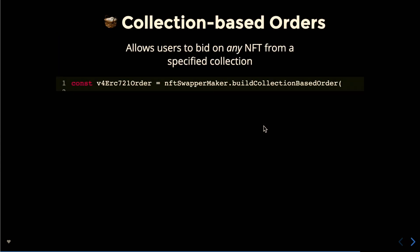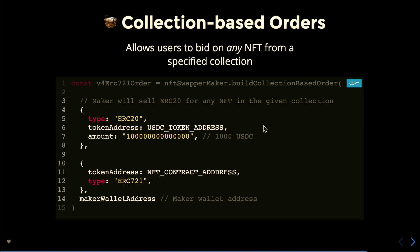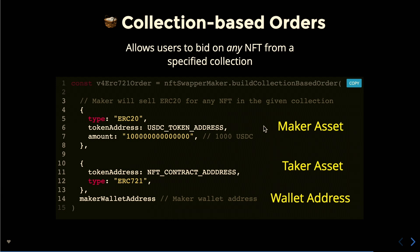Collection-based orders allow you to bid on any NFT from a specific collection. In practice, you use the build order collection method, give it certain criteria and the amount you're interested in paying, along with the maker-taker asset and wallet.